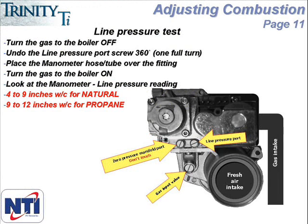When the unit is running, the line pressure should be 7 inches for natural gas, with an acceptable range from 4 inches to 9 inches. The propane target is 11 inches and the acceptable range is from 9 to 12. Line pressure of 14 inches or more,